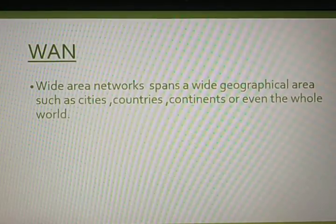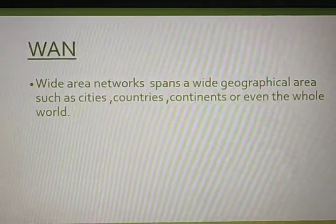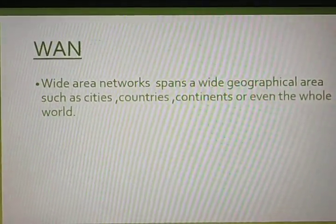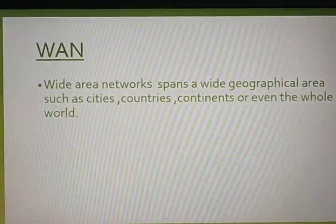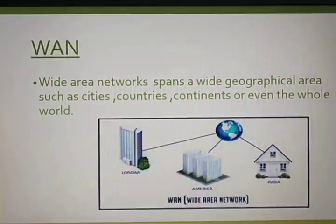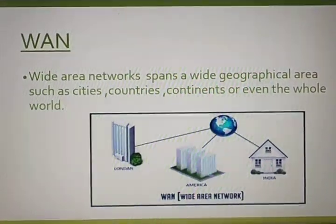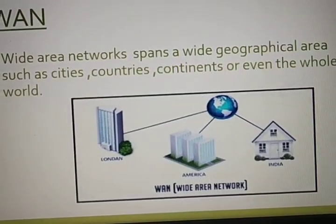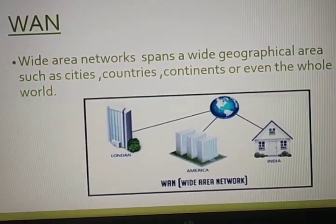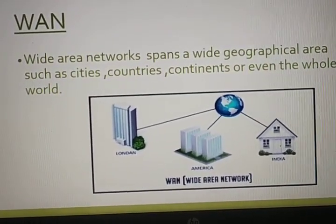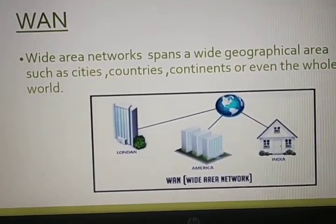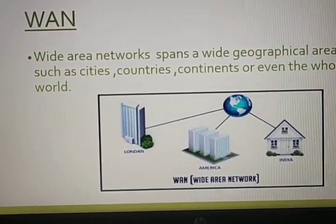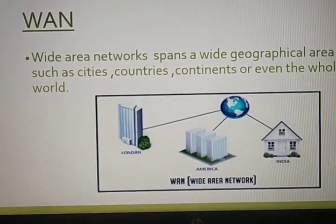Next we have WAN, Wide Area Network, which spans a wide geographical area like countries, continents, and even the world. See the picture over here — London, America, and India are connected with the help of the internet. When you talk with people all around the world, the network you are using is WAN.